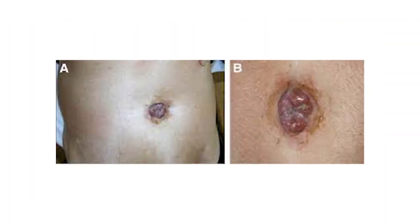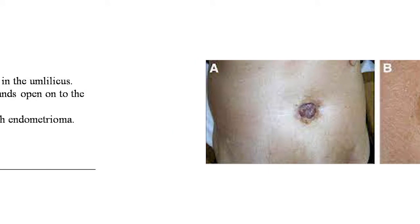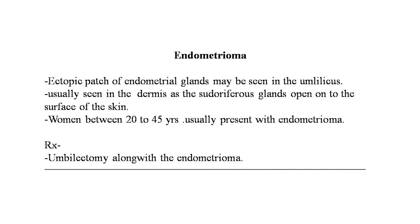Images of typical umbilical adenoma are shown on screen. The next entity is endometrioma — an ectopic patch of endometrial glands seen in the umbilicus, usually in the dermis. It is seen between 20 to 45 years of age. Treatment is umbilectomy along with excision of the endometrioma.